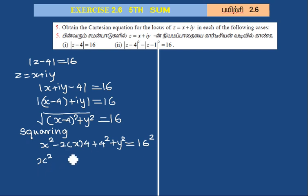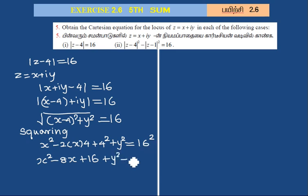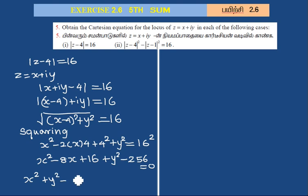Expanding: x squared minus 2 into 4 is 8, so minus 8x, plus 4 squared is 16, plus y squared equals 16 squared which is 256. Rearranging the order: x squared plus y squared minus 8x plus 16 minus 256 equals 0, giving x squared plus y squared minus 8x minus 240 equals 0. This is the locus of z.